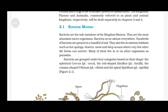Kingdom Monera: Bacteria are the sole members of Kingdom Monera. They are the most abundant microorganisms and occur almost everywhere. Hundreds of bacteria are present in a handful of soil. They also live in extreme habitats such as hot springs, deserts, snow and deep oceans where very few other life forms can survive. Many of them live in or on other organisms as parasites.